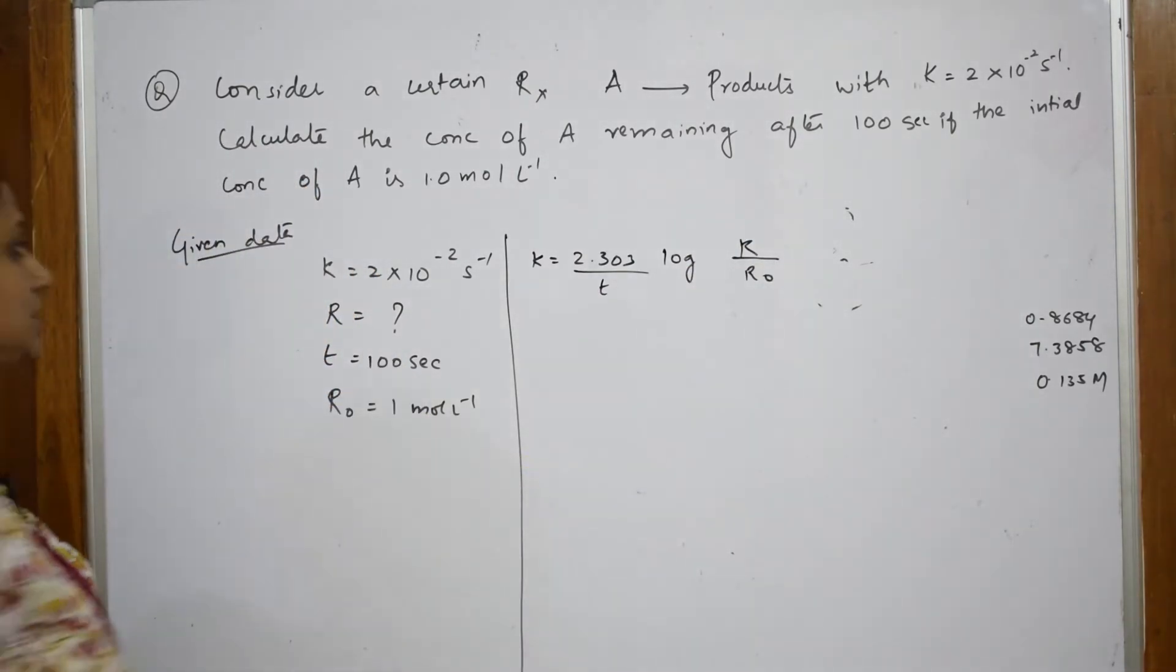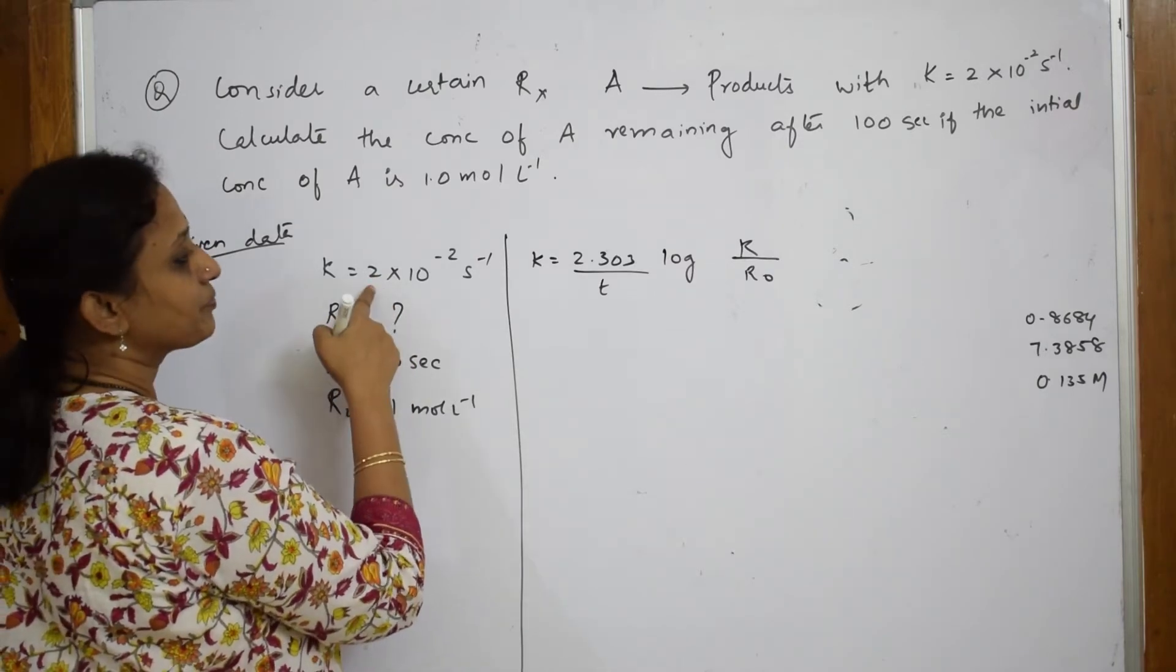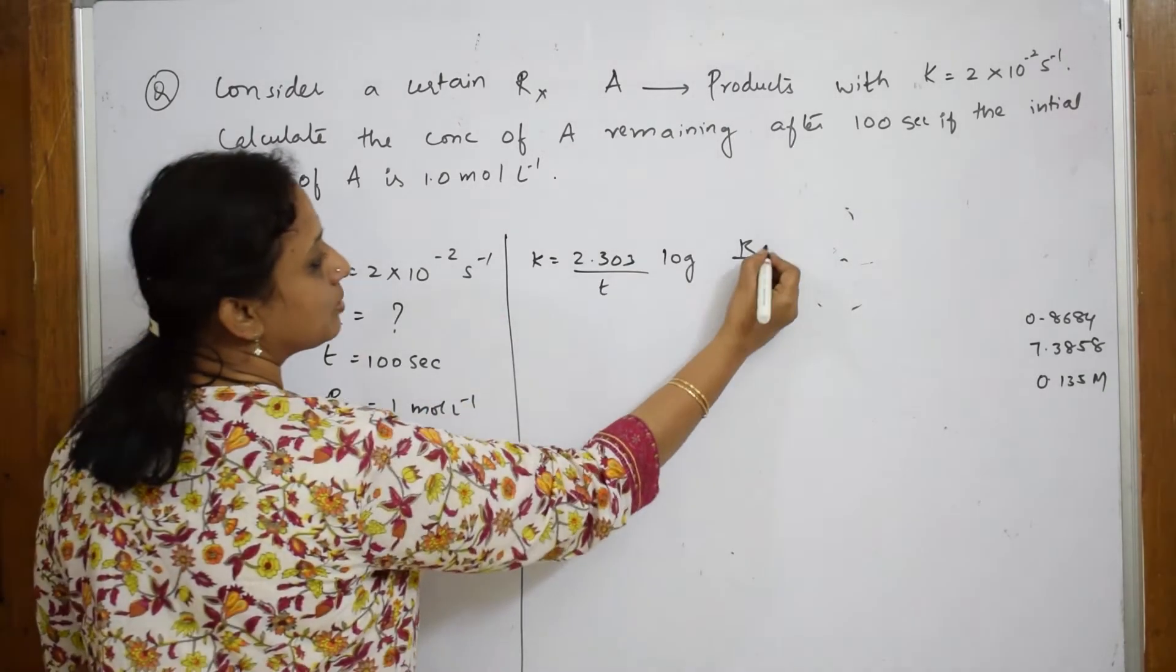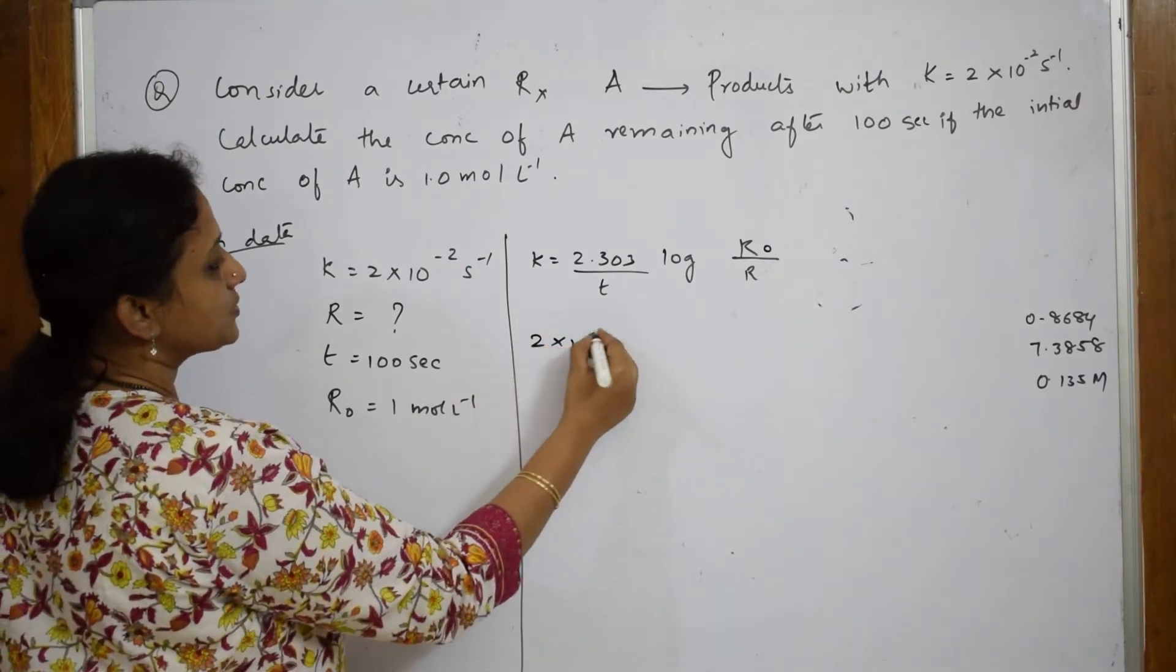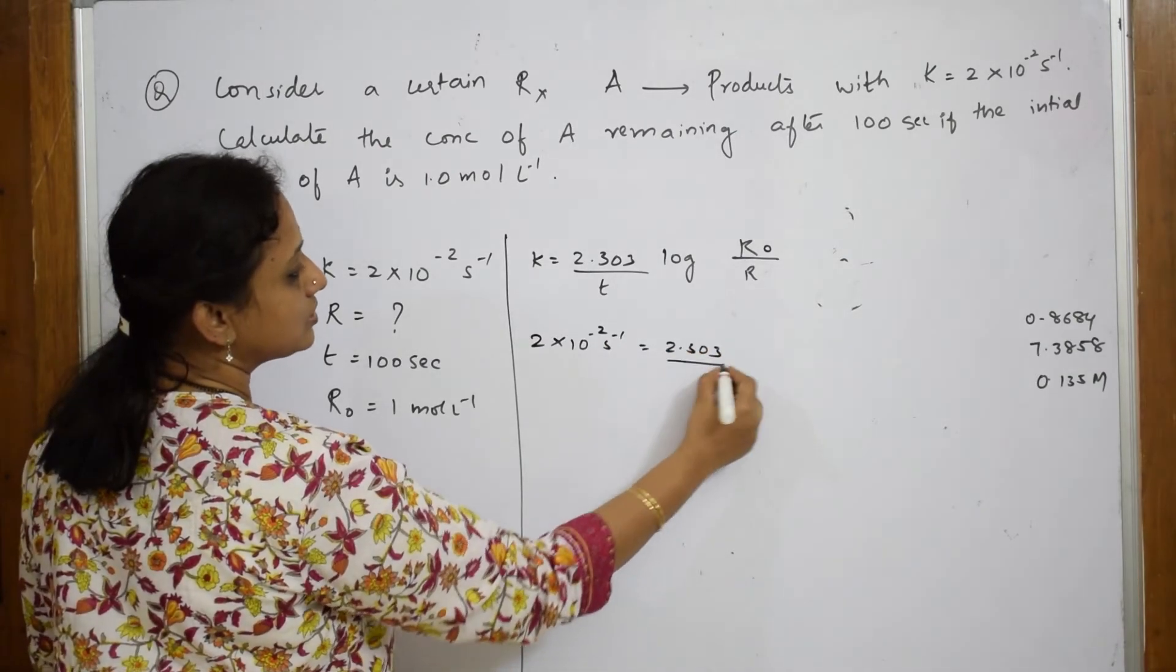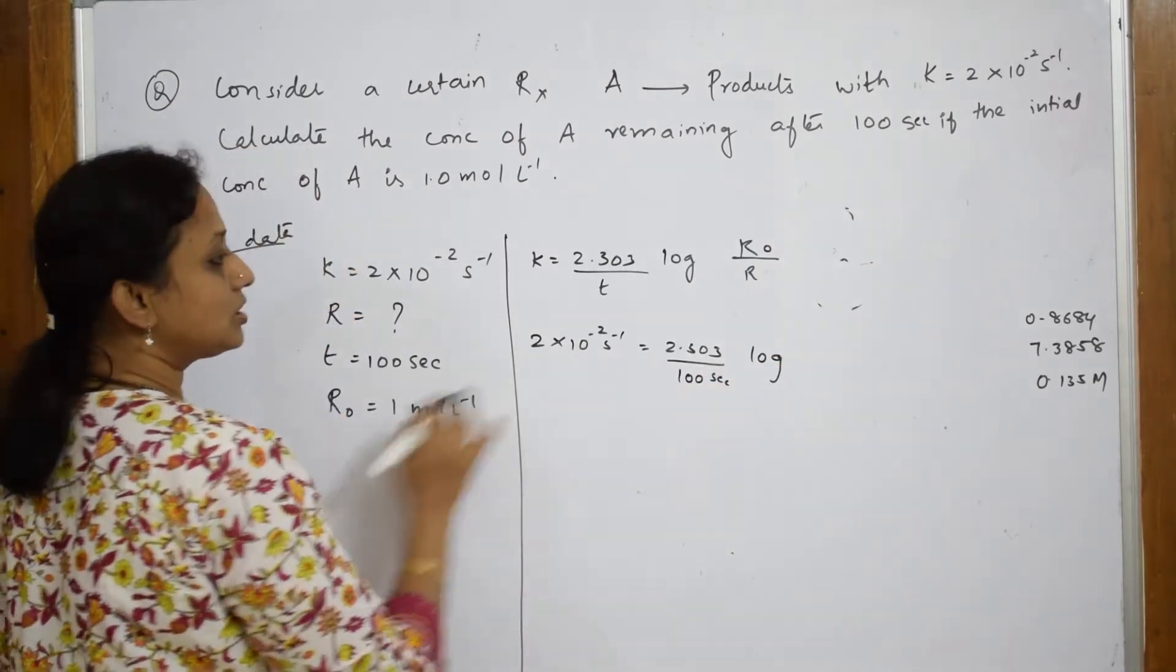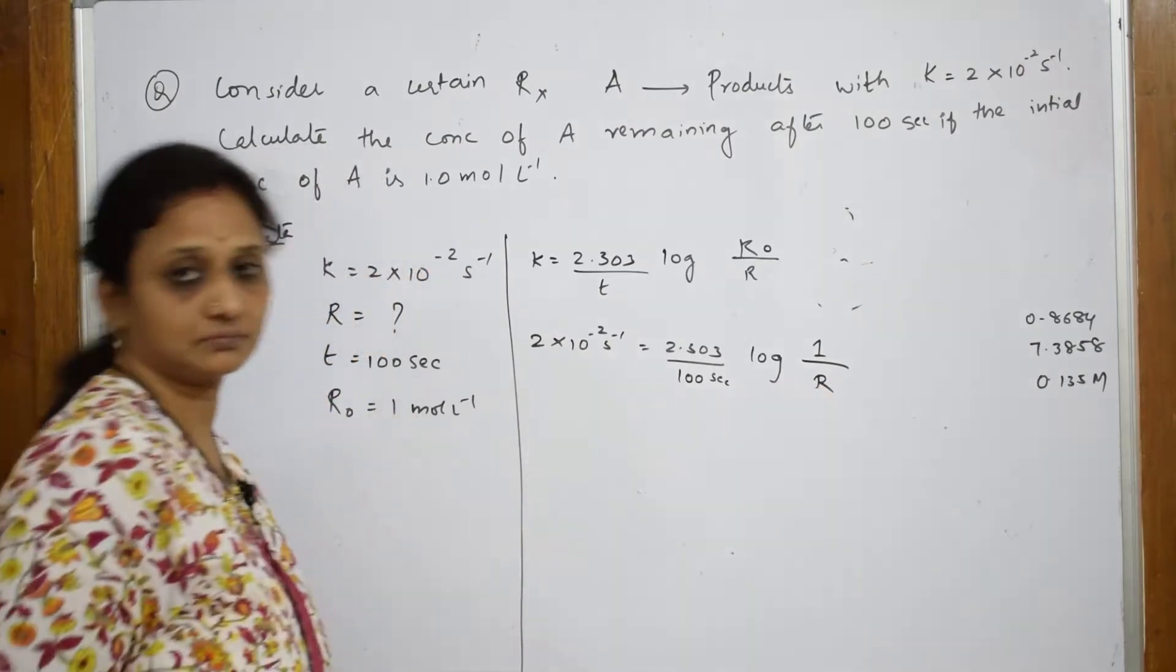K is equal to 2.303 by T log R₀ by R. K value is given, T value is given, I have to find R₀ by R. Now let us write, 2 into 10 to the minus 2 second inverse is equal to 2.303 by your T is 100 seconds log R₀ given as 1 divided by R. I have to find this.